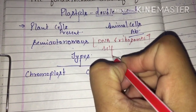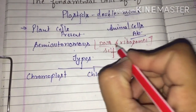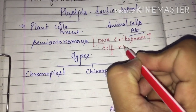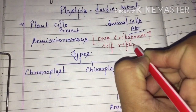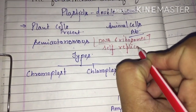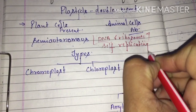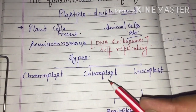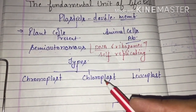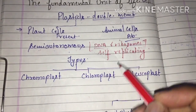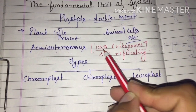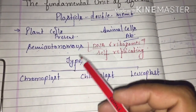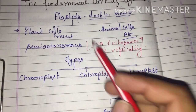Self-replicating means that having their own DNA, they can regulate their own work, and can double themselves without any external help. Replication means to double oneself, to divide oneself. They have their own DNA and their own ribosomes. Hence, these are semi-autonomous organelles.